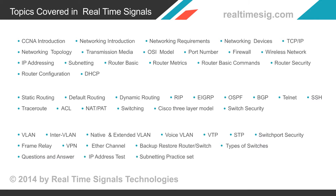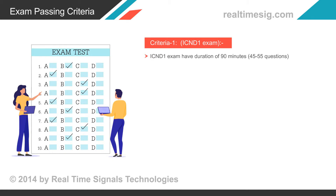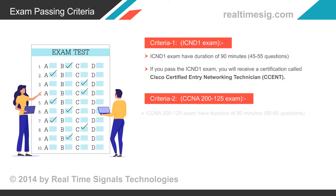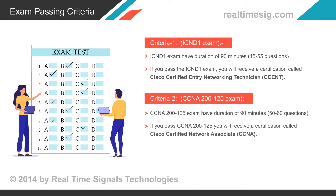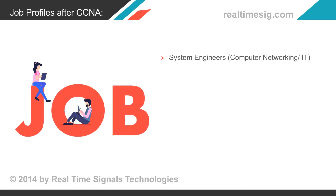Exam passing criteria — Criteria 1: ICND1 exam. If you pass the ICND1 exam, you will receive a certification called Cisco Certified Entry Networking Technician (CCENT). Criteria 2: CCNA 200-125 exam, which has a duration of 90 minutes and 50–60 questions. If you pass the CCNA 200-125, you will receive a certification called Cisco Certified Network Associate (CCNA). The total score of CCNA 200-125 is 1000, and the minimum passing score is somewhere around 800 to 850.